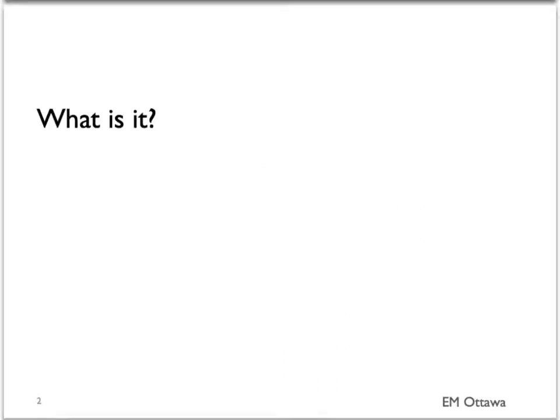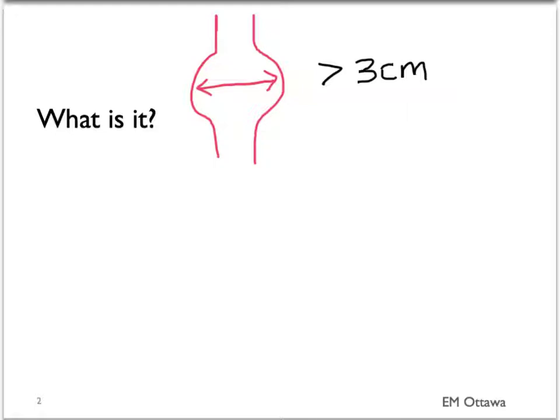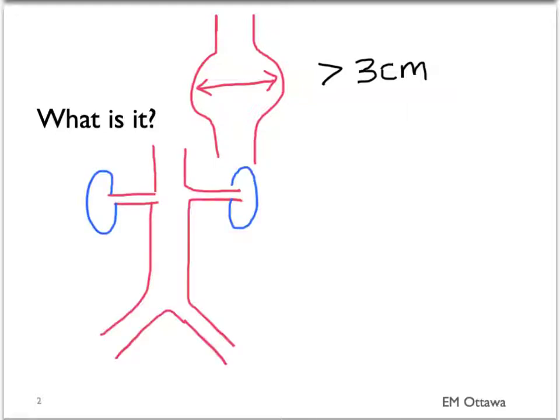AAA is defined as the dilatation in the abdominal aorta that's more than three centimeters. In terms of their location, most of them are found below the renal arteries and above the iliacs.